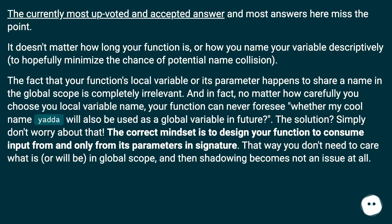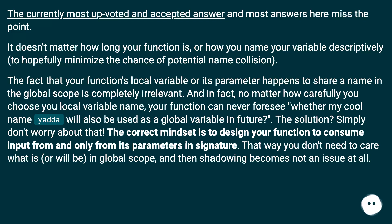The currently most upvoted and accepted answer, and most answers here, missed the point. It doesn't matter how long your function is or how descriptively you name your variable to minimize the chance of potential name collision. The fact that your function's local variable or its parameter happens to share a name with the global scope is completely irrelevant. No matter how carefully you choose your local variable name, your function can never foresee whether 'my_cool_name' or 'yada' will also be used as a global variable in the future.